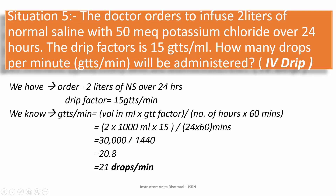If it is asked in hours, we are not supposed to multiply by 60. By calculating the numerator we get 30,000 and the denominator gives 1,440. Dividing, we get 20.8, and rounding this figure we get 21 drops per minute.